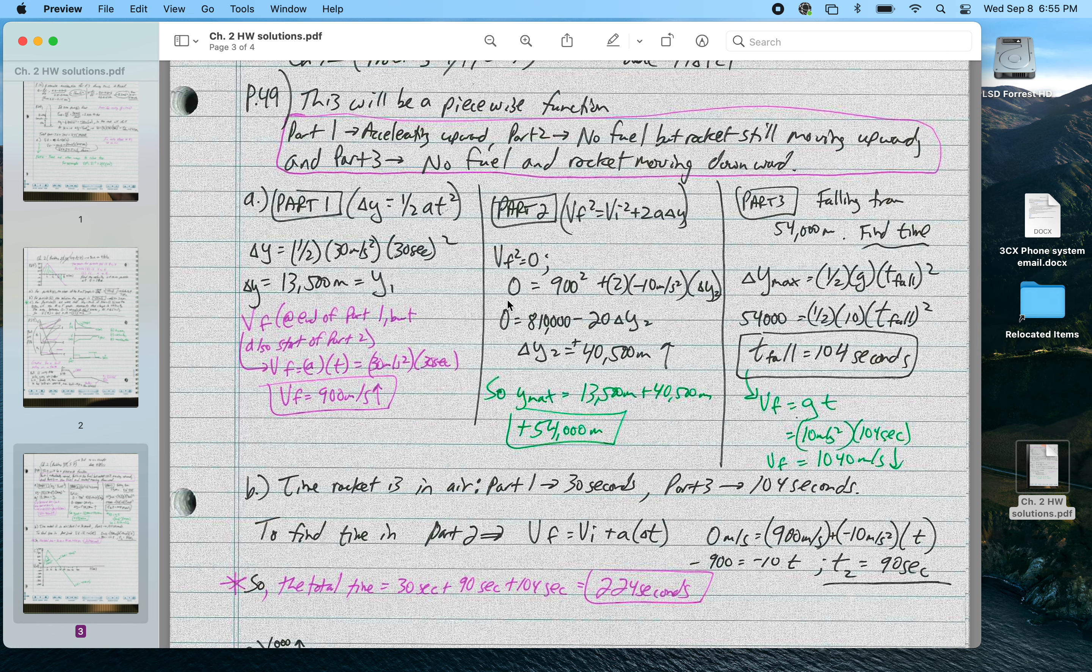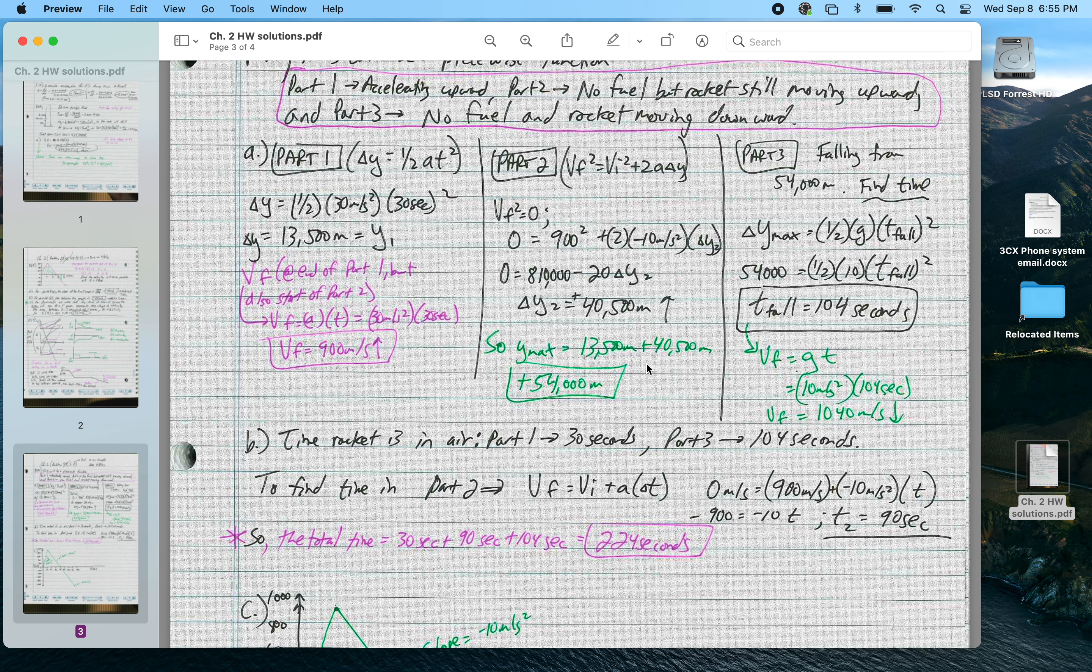I get that my change in vertical height during region 2 is 40,500 meters, so my total maximum height is 54,000 meters.